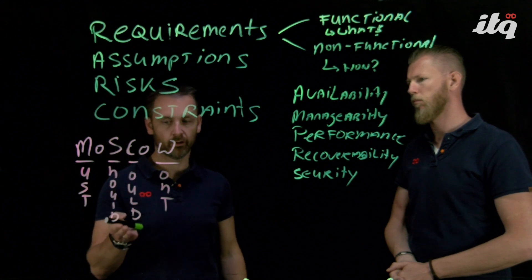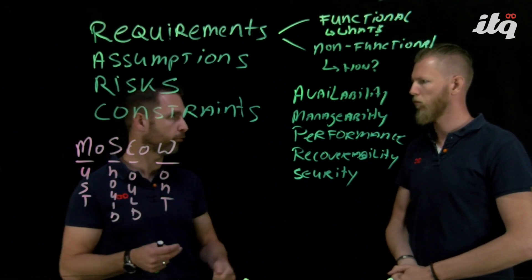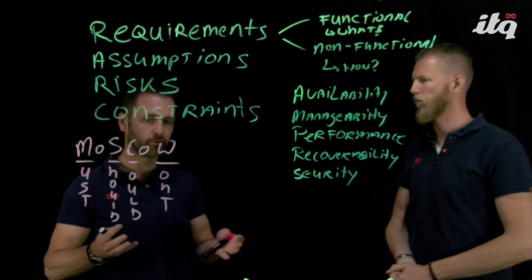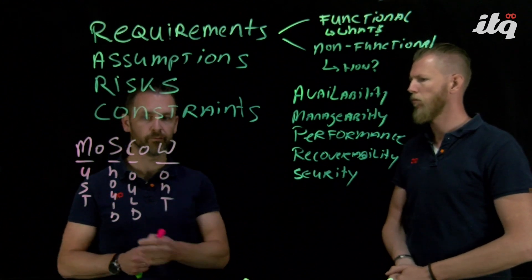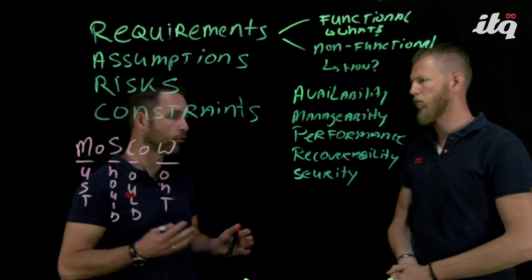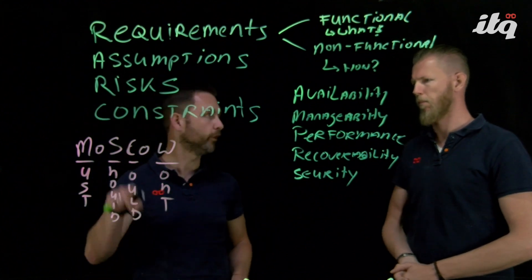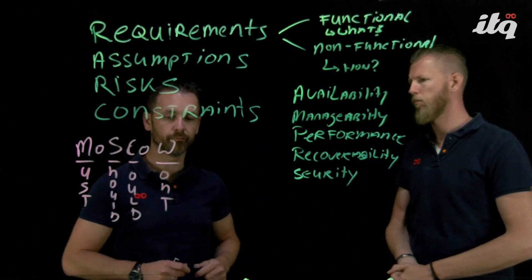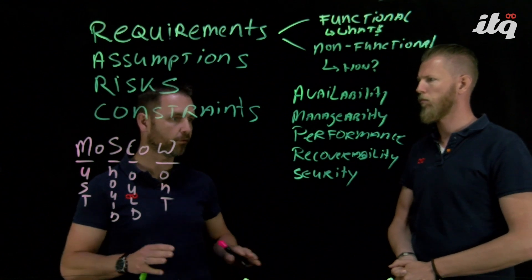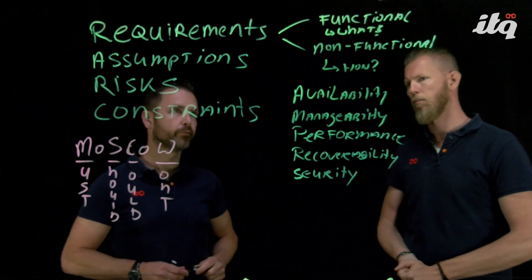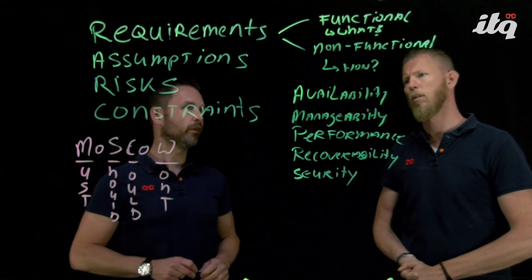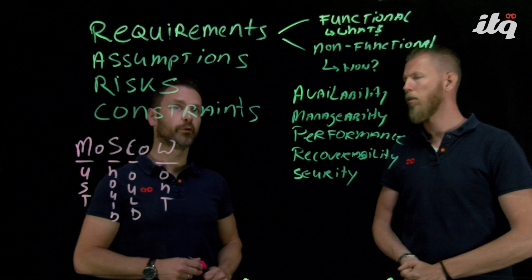The could-haves, those are really the nice-to-haves. If it's possible within budget, within time, to realize a could-have, then you should go about it, but you shouldn't put your whole project at risk to meet a could-have requirement. And the won't-have is something that you absolutely won't tolerate or won't allow in your design. So I think this kind of captures the requirements.